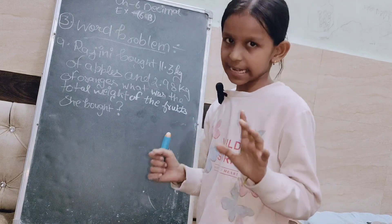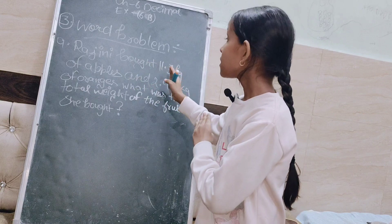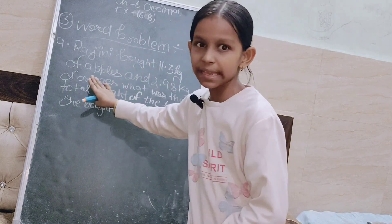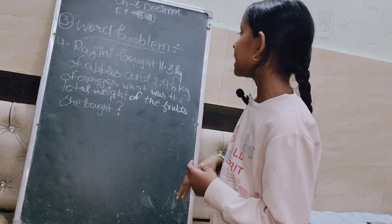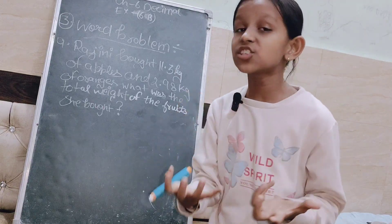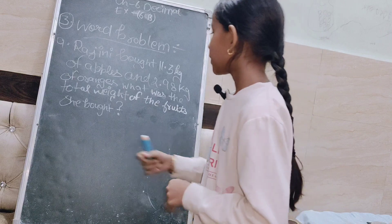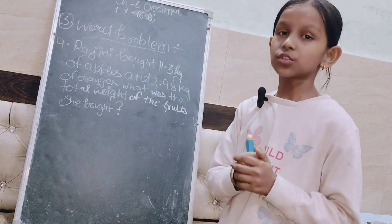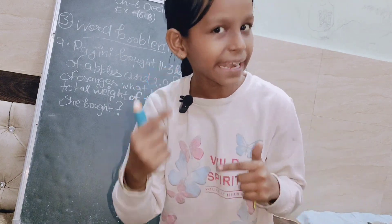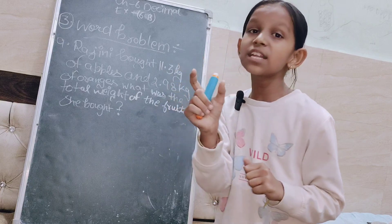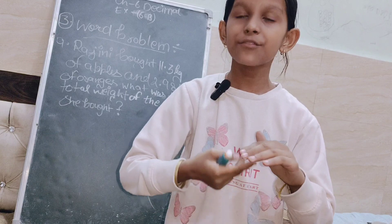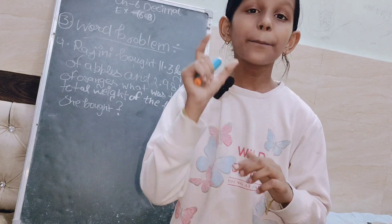We simply have to do this. Rajni is a girl who has 11.3 kg of apples and 2.98 kg of oranges. So how much is the total weight of the apple and orange? What do we need to do? If we need to find the total, I want to add a tip: addition gives the total.